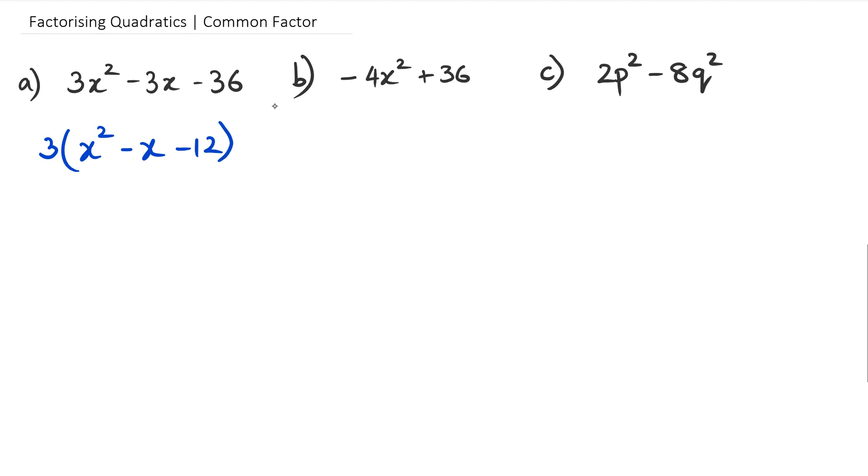And now inside the bracket what you have is a straightforward quadratic which you can factorize because we know that two numbers that multiply to negative 12 and add to negative 1 is going to be negative 4 and positive 3.